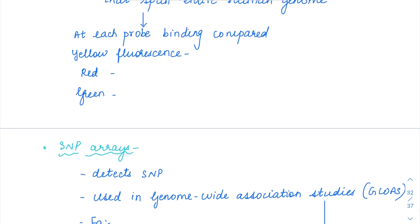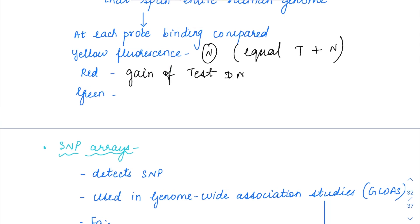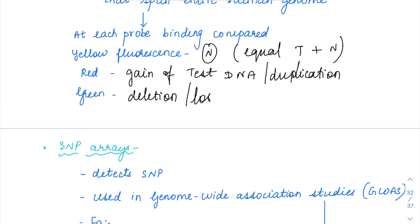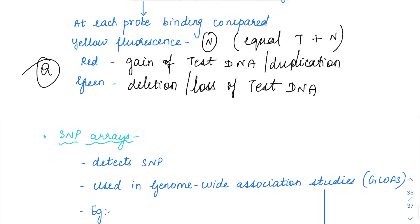If there is yellow fluorescence in a well, it means both dyes are being expressed equally — that is, test DNA and normal DNA are equal — meaning it is normal. If there is red fluorescence at a particular well, it means there is a gain or duplication of the test DNA. However, if at a well there is green fluorescence, it means there is loss or deletion of test DNA at that particular site. Remember: green is for loss, red is for gain — based on the fluorescence you can detect where exactly the problem is.